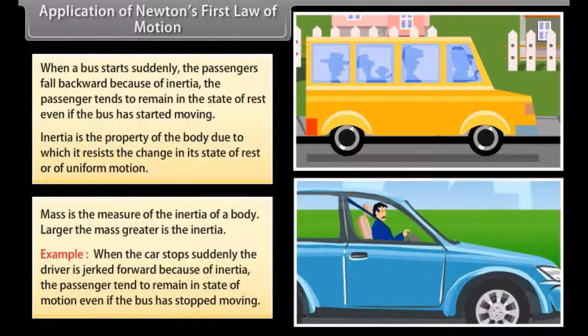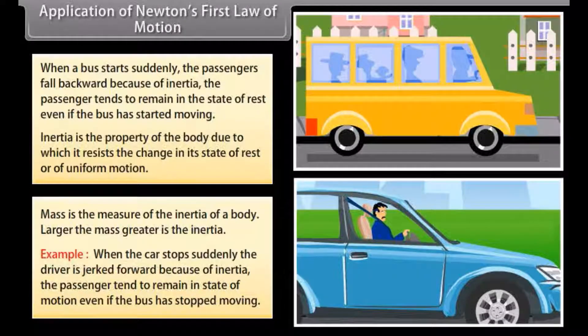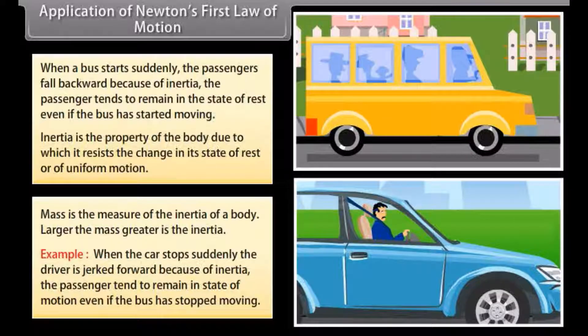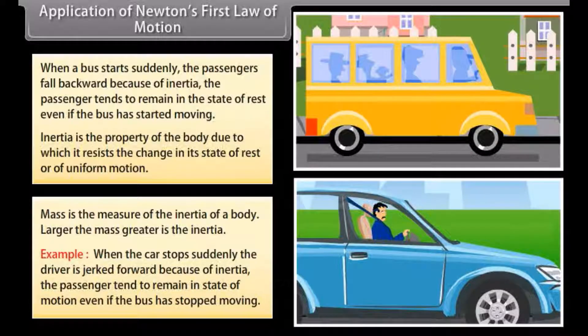For example, when the car stops suddenly, the driver is jerked forward because of inertia. The passenger tends to remain in the state of motion even if the bus has stopped moving.